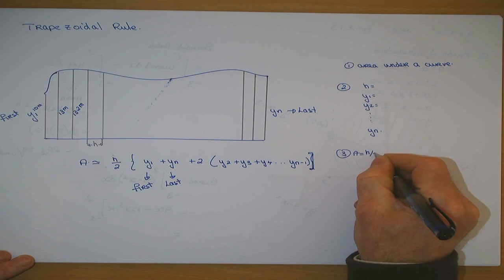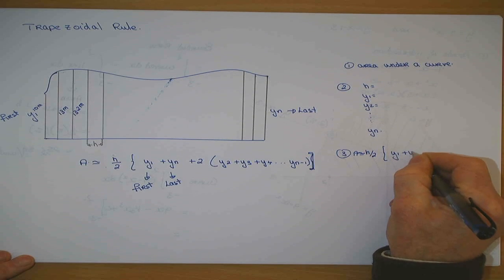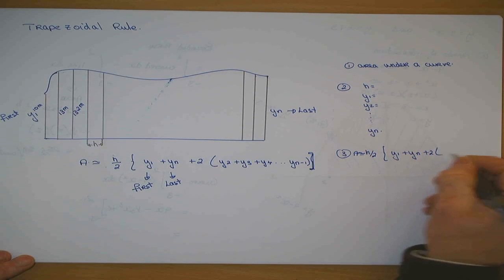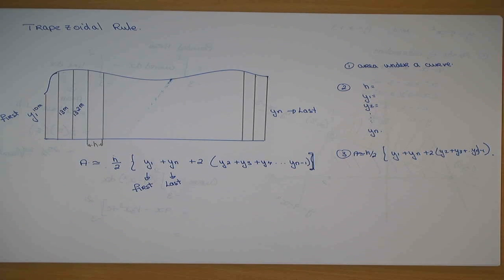The area then is equal to H over 2, approximately equal to H over 2. Y1 plus Yn plus twice Y2 and Y3 up to Yn minus 1, fill it into that formula. Mathematically, it's pretty straightforward.